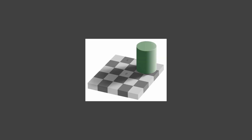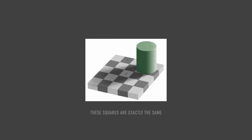The next test will show you how your eye can make an error in assessing brightness. What colour are squares A and B on this board? You can see clearly that A is dark grey and B is light grey. But in fact, these squares are exactly the same. To see this, it is enough to connect them with one common plate.